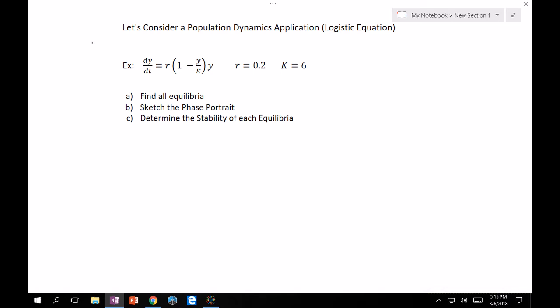So this is the population dynamics, classic question that tech professors love to ask. So we'll take a quick look at this. So I'm giving you the autonomous equation. dy/dt is equal to r times (1 minus y/k) times y. And then I give you r is equal to 0.2 and k is equal to 6. So the first part is find all the equilibria. The next part is sketch the phase portrait. And then finally, determine the stability of each equilibria.